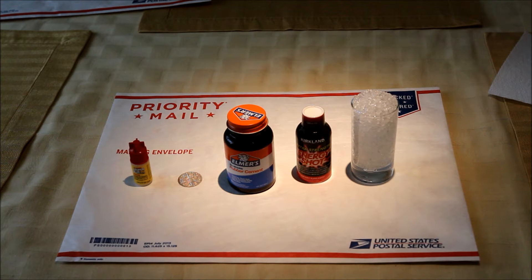We have rubber cement, an energy drink, and water crystal gels. And underneath there's a priority mail envelope that you can get for free from the US Postal Service. It happens to be Tyvek.